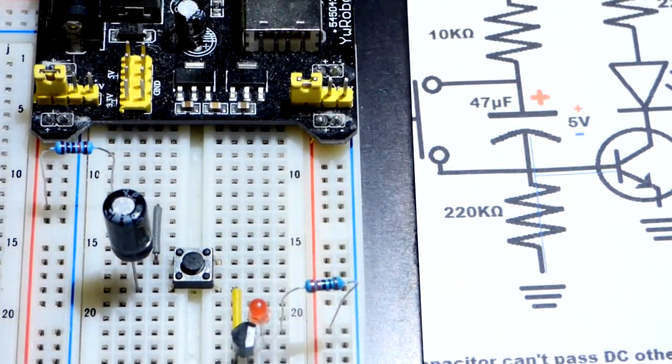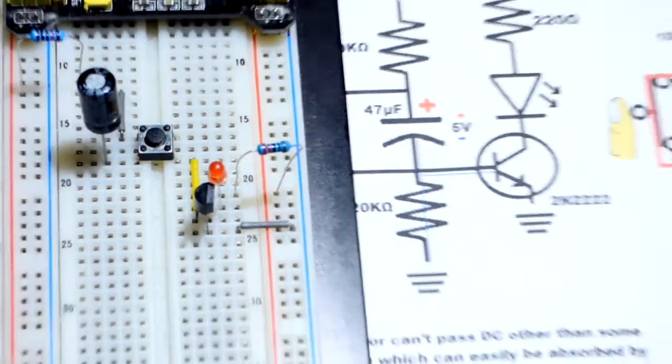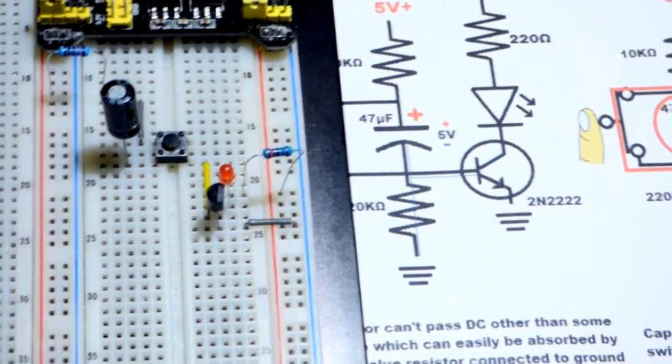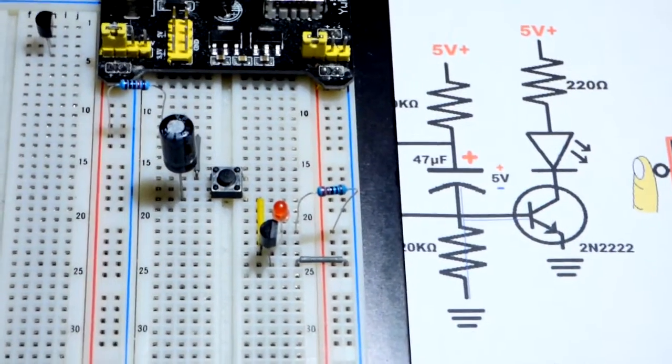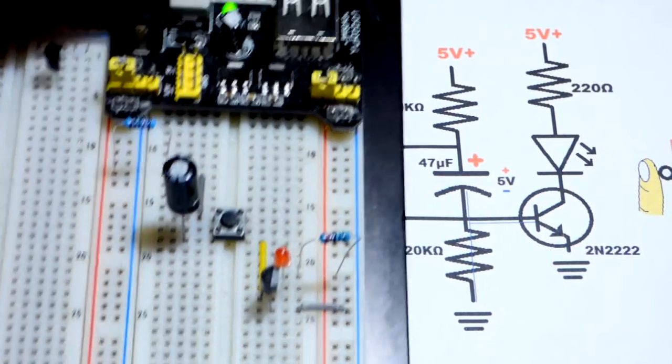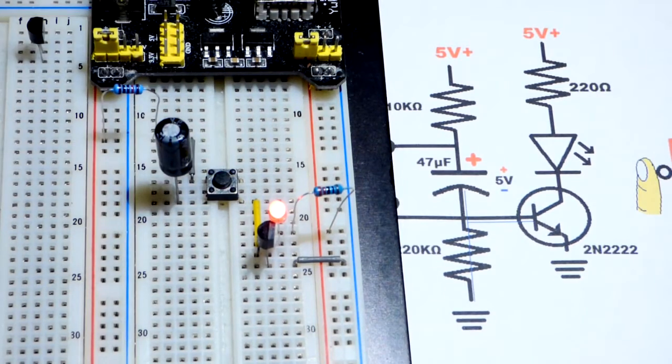We could just leave the circuit like this. Let's zoom back a little bit. And on the schematic there's one more resistor. We could just leave the circuit like this. Power is on.